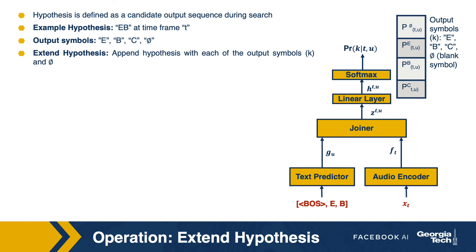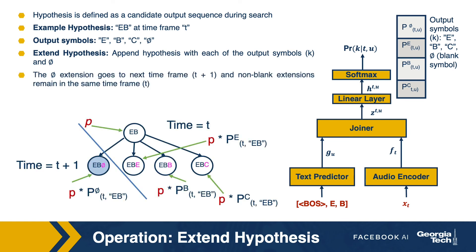The output symbols are the letters of the language and blank. Assuming our language has three letters — E, B, and C — the new hypothesis extended with the blank symbol from hypothesis EB will go to the next time frame T plus 1. Other extended hypotheses continue to stay in the current time frame. So hypothesis EB-blank goes to time frame T plus 1, while EBE, EBB, and EBC continue to stay in time frame T.